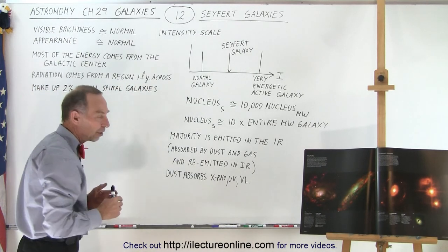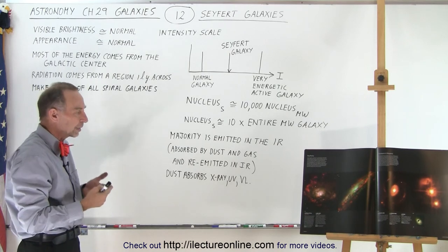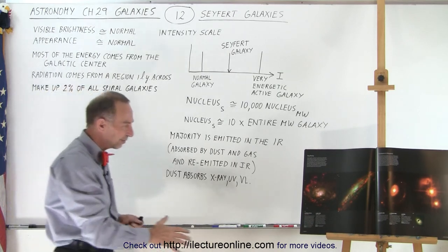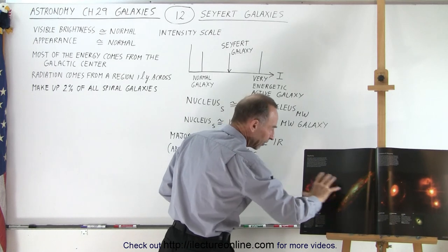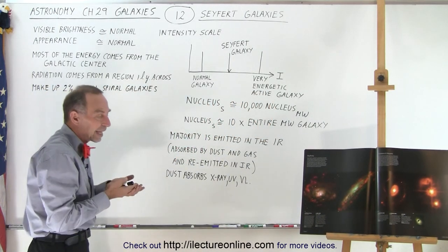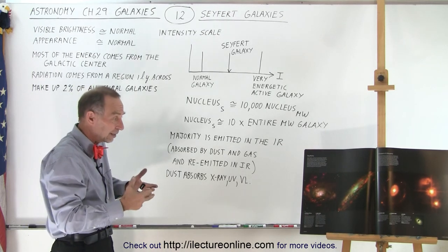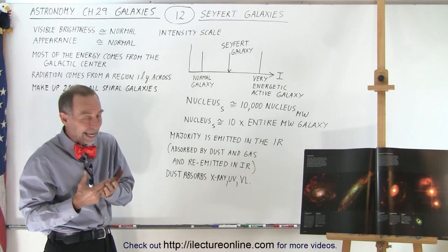The visible brightness of a Seyfert galaxy is roughly the same as the visible brightness of a normal galaxy, so visually, for the rest of the galaxy, you don't see a lot of difference. Secondly, the appearance of a Seyfert galaxy is very much like the appearance of normal spiral galaxies. Again, from that perspective, they don't look any different.